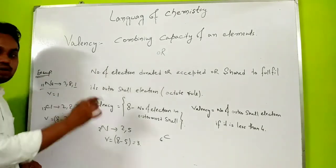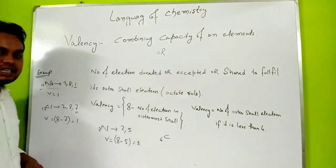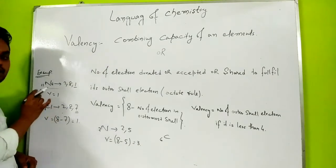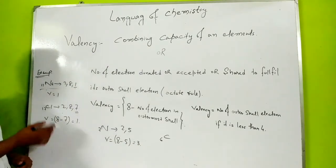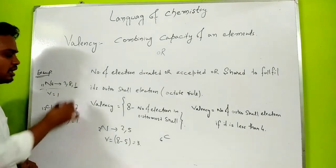Let's take sodium. We know the atomic number of sodium is 11, so the electron configuration is 2, 8, and 1. The last shell contains 1 electron, so valency is equal to 1.